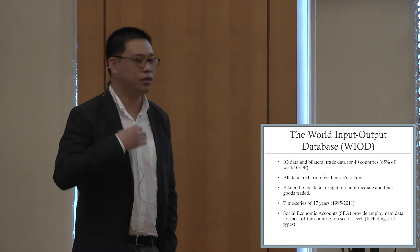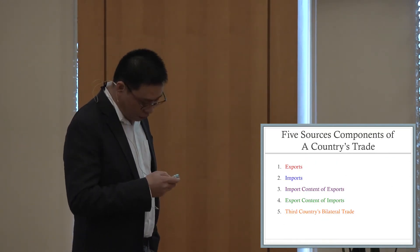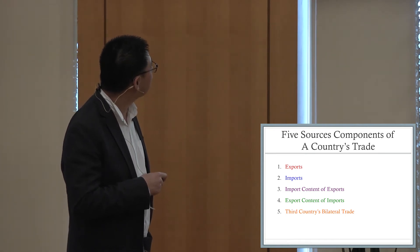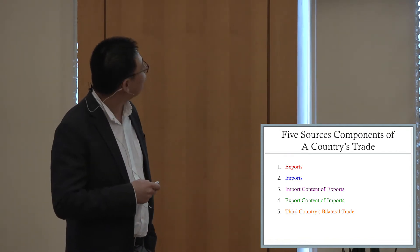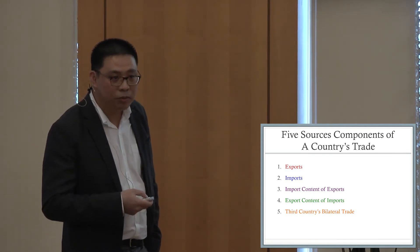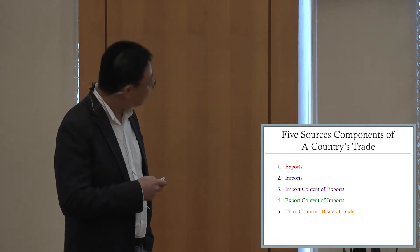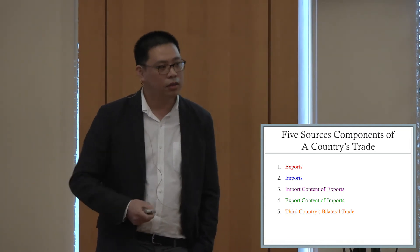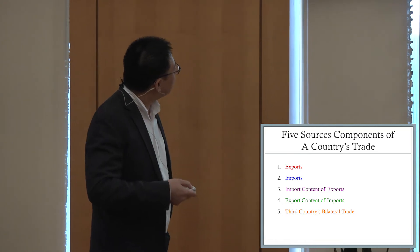With this database, we're able to decompose each country's trade into the five aforementioned components. The data is provided as a time series from 1995 to 2011, and we also have social economic accounts that provide employment data for most countries at the sectoral level, including skill types. Using the database and a technique I developed, I was able to decompose each country's trade into the five components — final export, final import, import content of export, export content of import, and third-party bilateral trade — and extract the labor content, calculating the labor demand generated from each component.